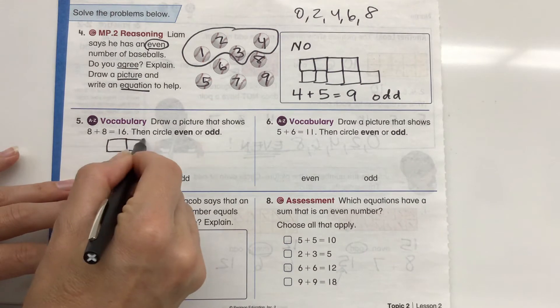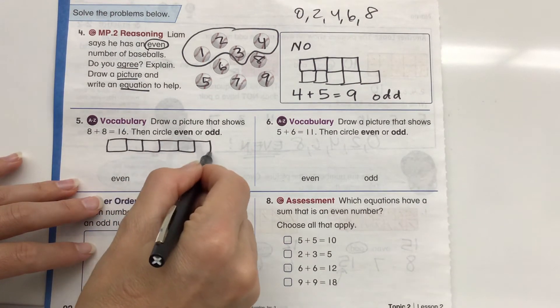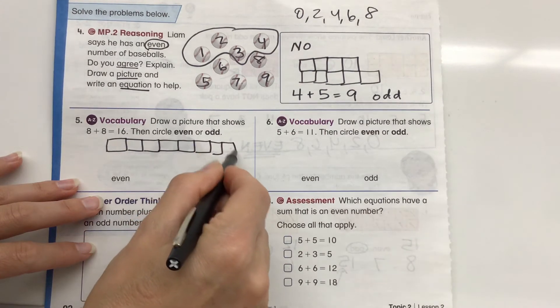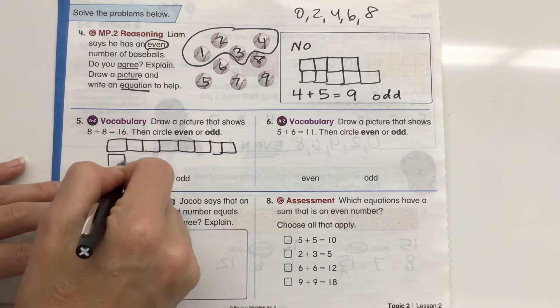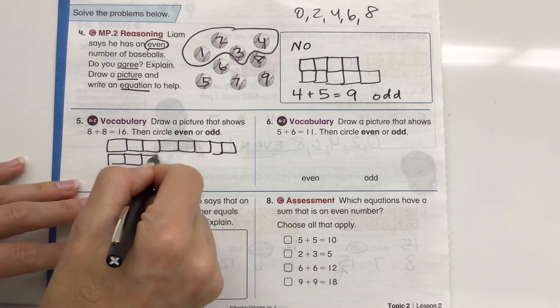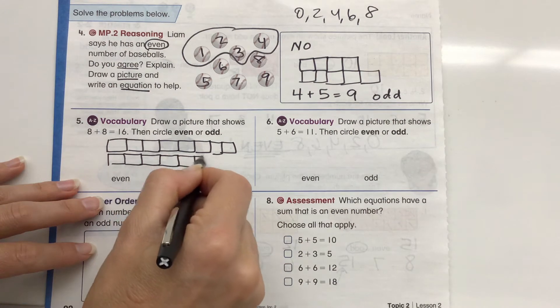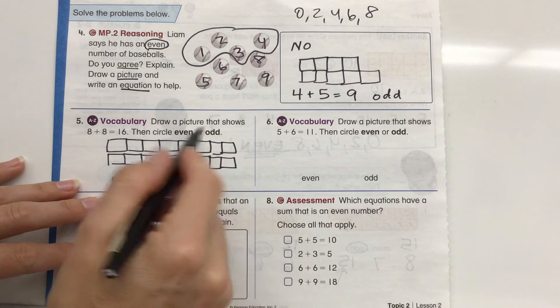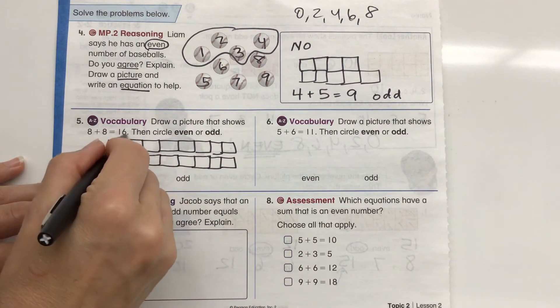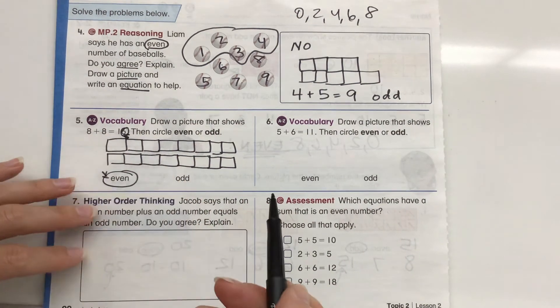So we're going to do our 8 plus 8 equals 16. 1, 2, 3, 4, 5, 6, 7, 8. And then we're going to draw 8 more underneath. 1, 2, 3, 4, 5, 6, 7, 8. Now, I can tell just by looking at it, it's going to be even. But I also know that the 6 is 0, 2, 4, 6, 8. Who do we appreciate? Even numbers.